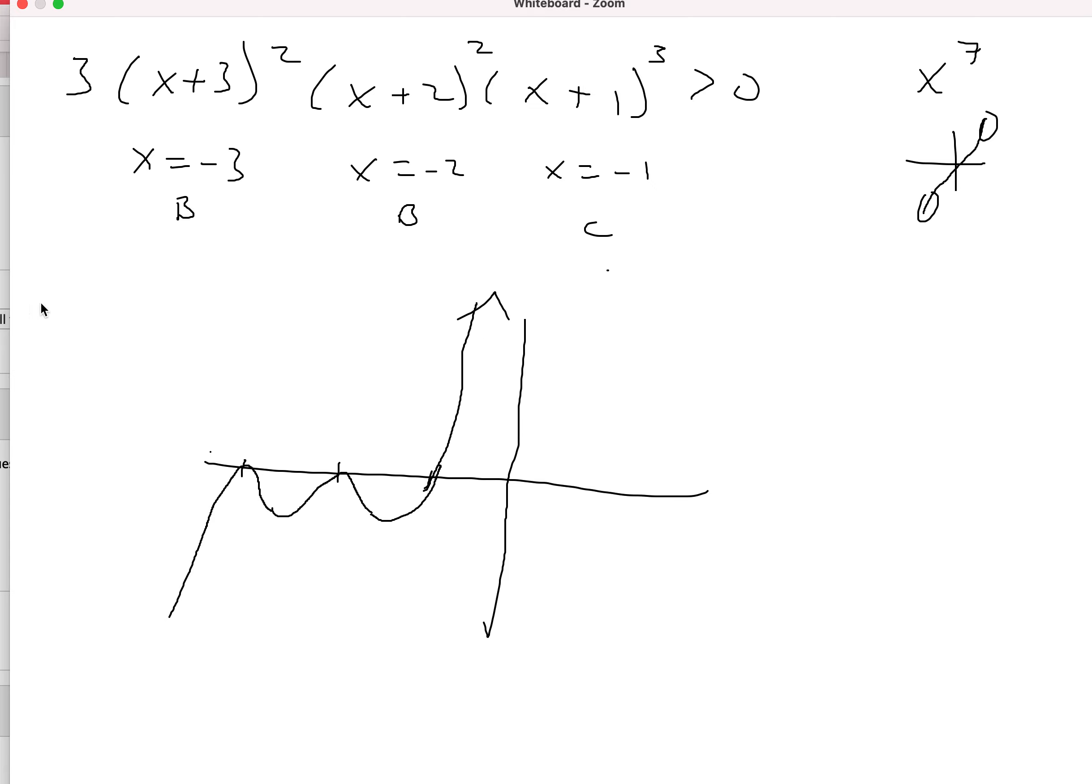So that would look something like that. Again, no equals. And we want it to be greater than 0. And so the only place, these 0s don't count. If that had an equals on it, then we would have to count those. But the only place this thing is above the axis is right there. So that's going to go from negative 1 to infinity.